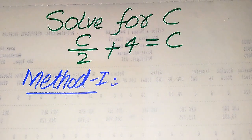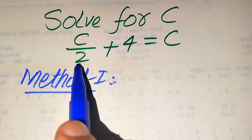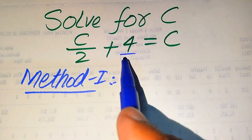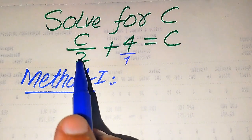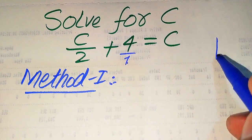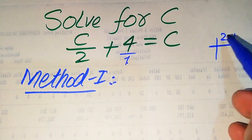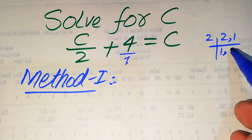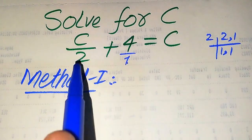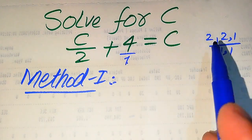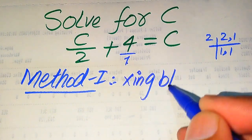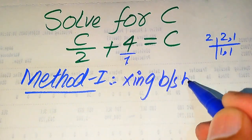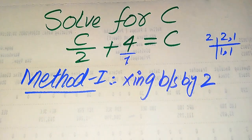We move towards the first method. In the first method we first need to find the LCM of the denominators. You see here the denominator of the first term is 1 and this term is also 1, so the LCM of both of these denominators is 2. We need to multiply both sides by the LCM, which is 2.